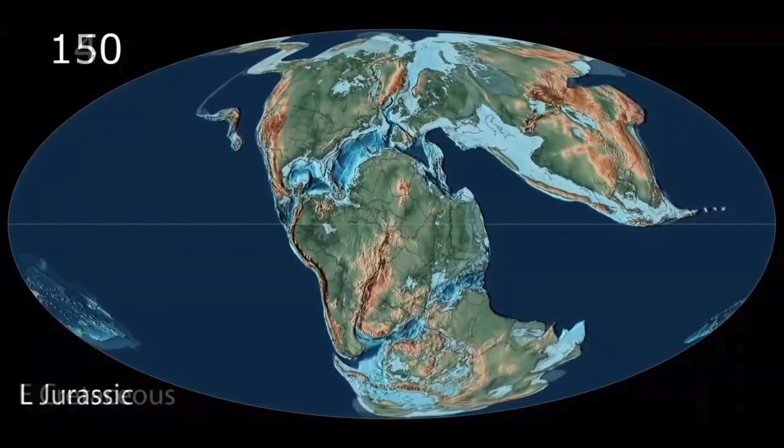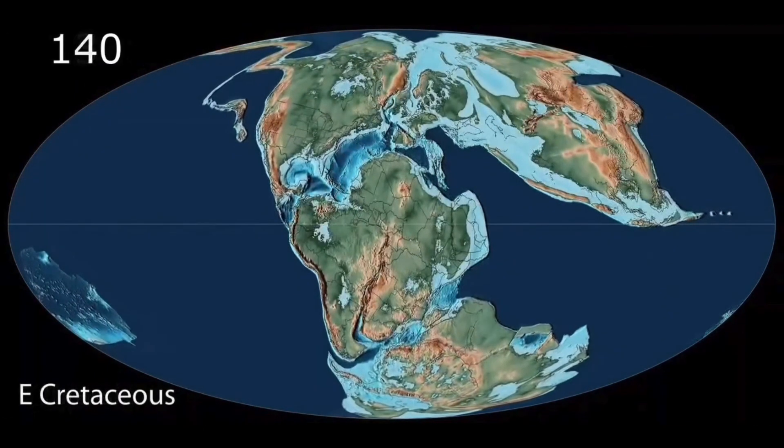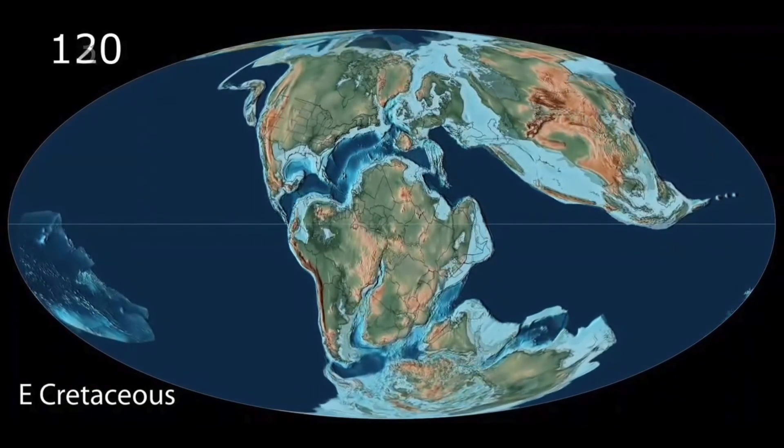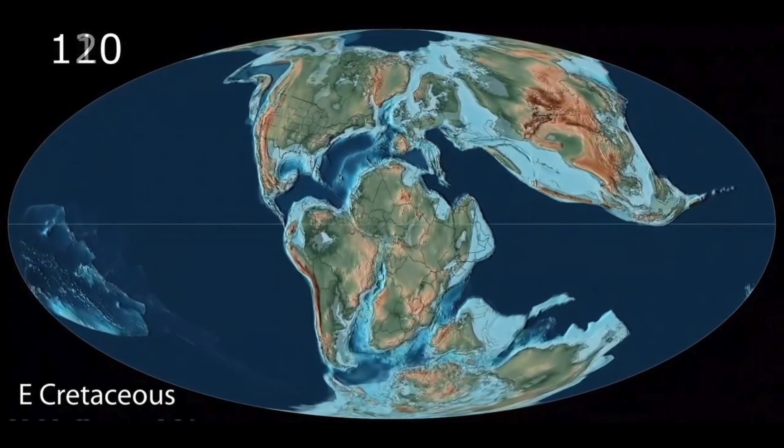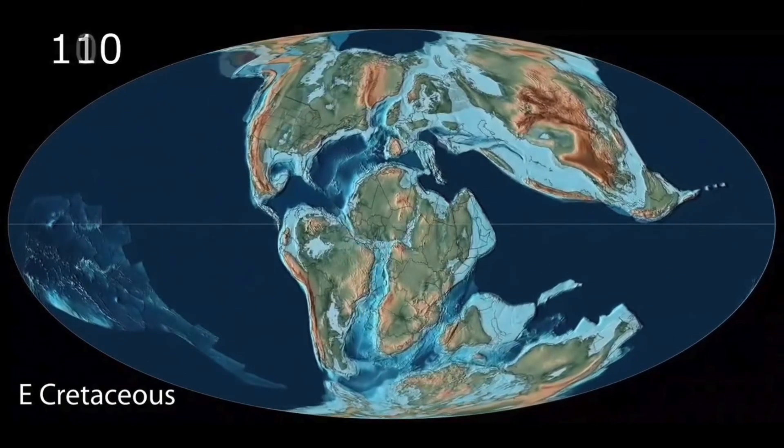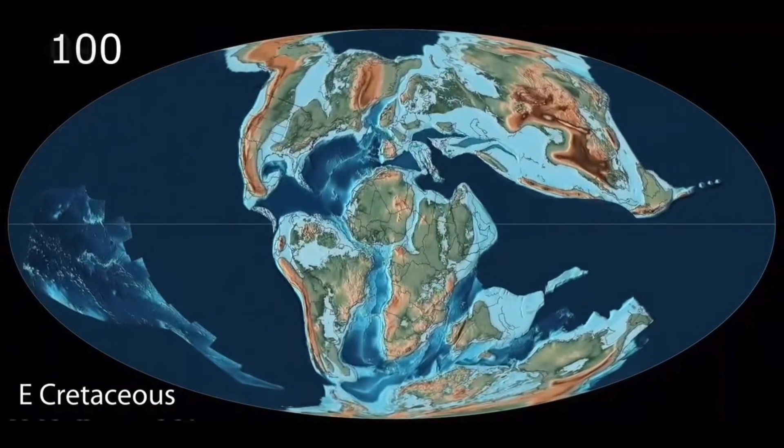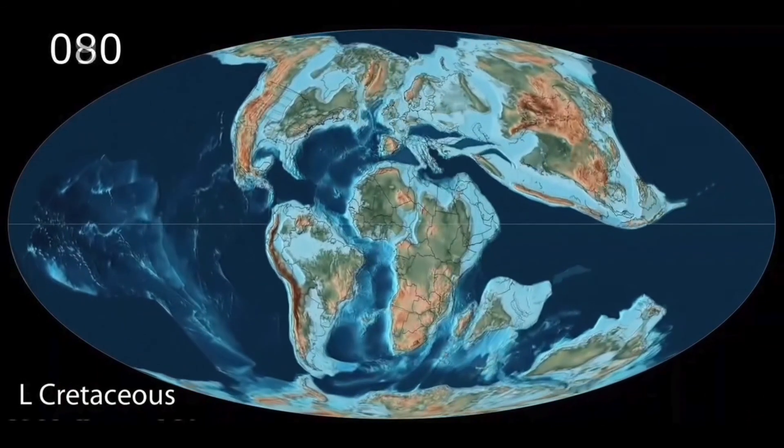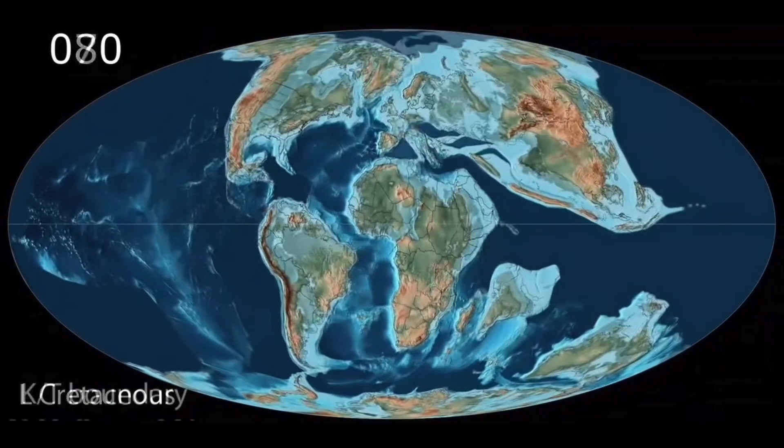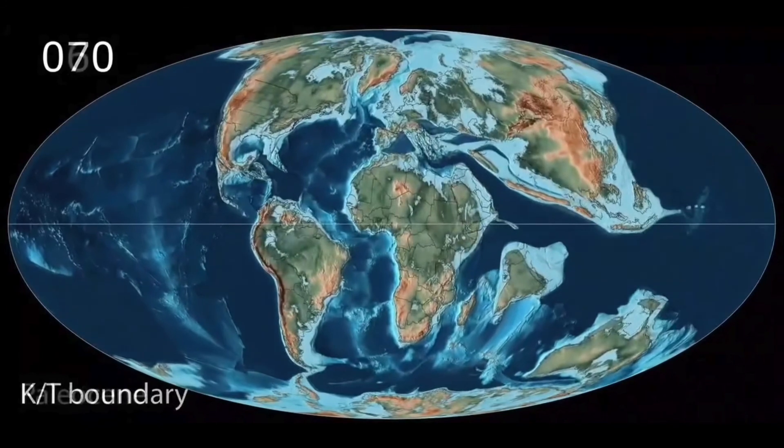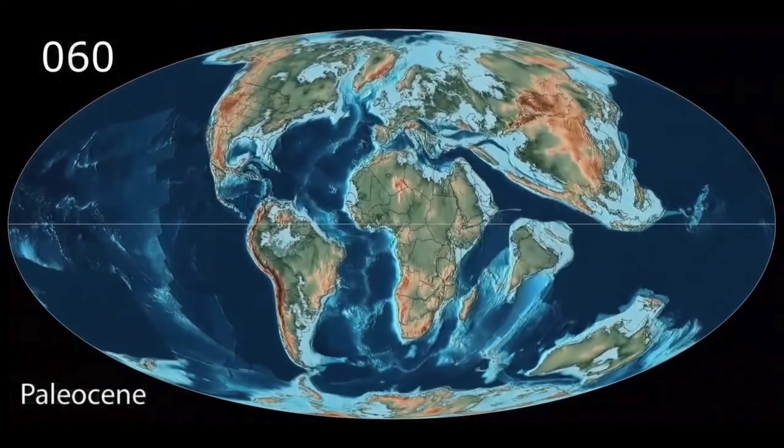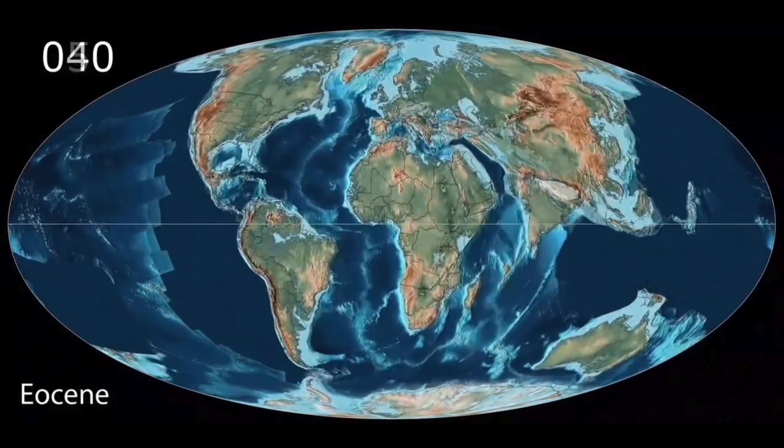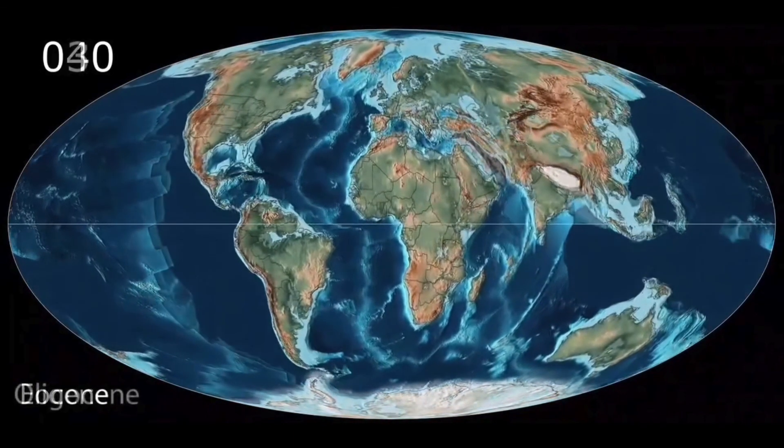Well, sometime in the middle Jurassic era, the North American plate separates from the African and South American plates. By the Cretaceous era, the African and South American plates separate. And if you look toward the middle right-hand side, you're going to see India. The Indian plate coming up and smashing into the Eurasian plate, building up the Himalaya mountains that we have today.